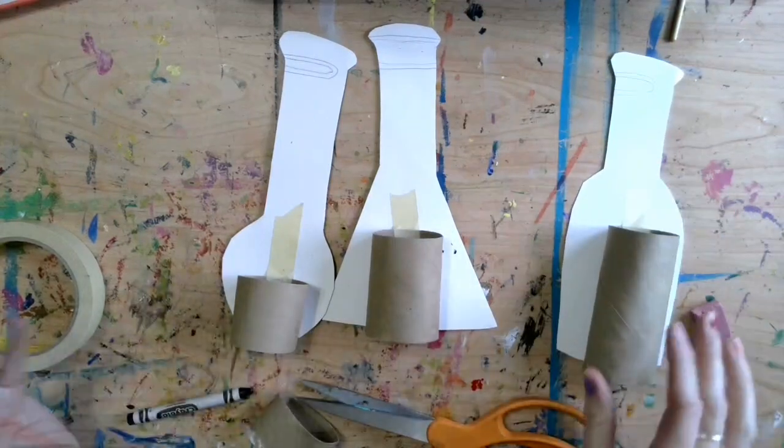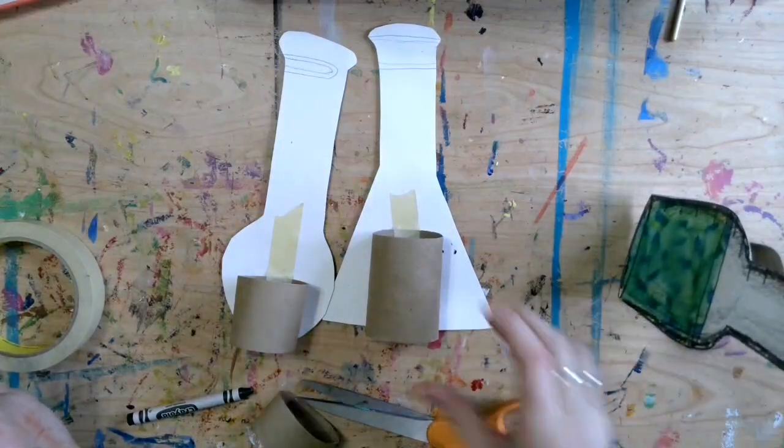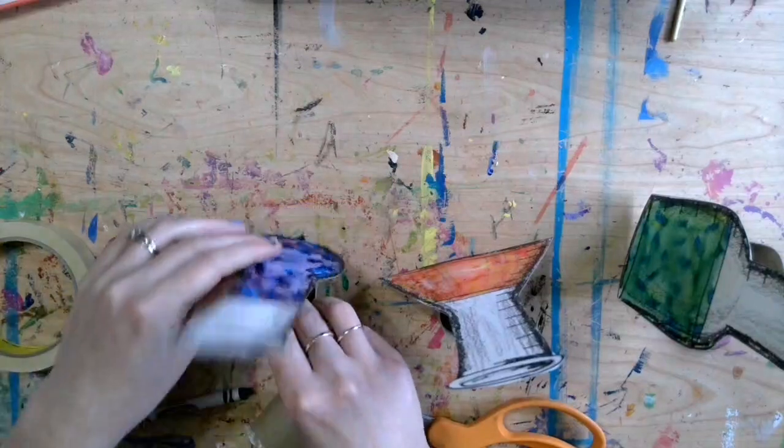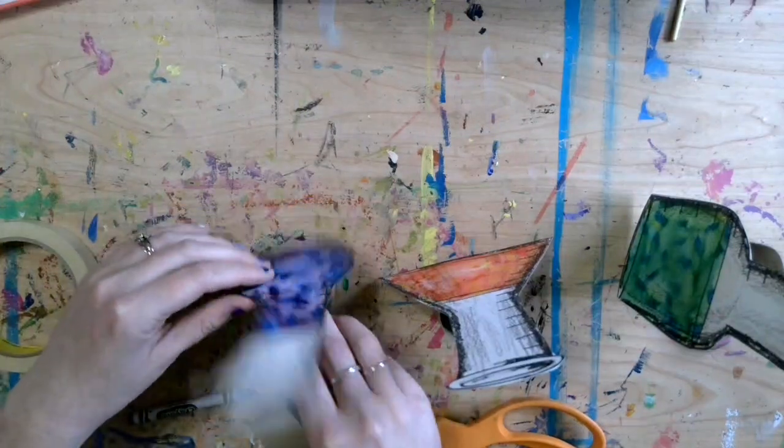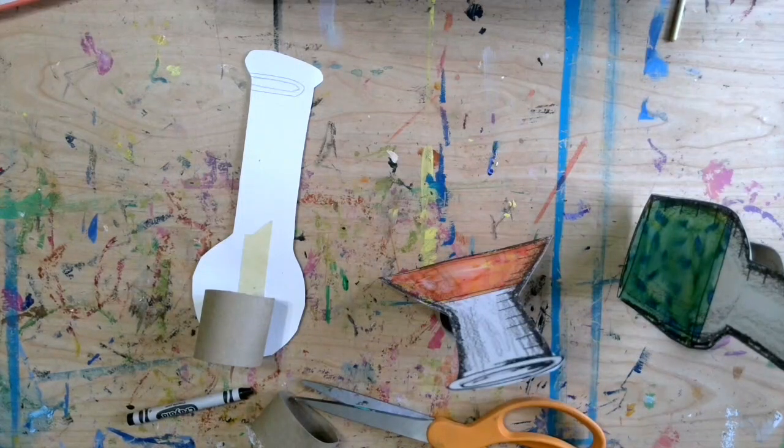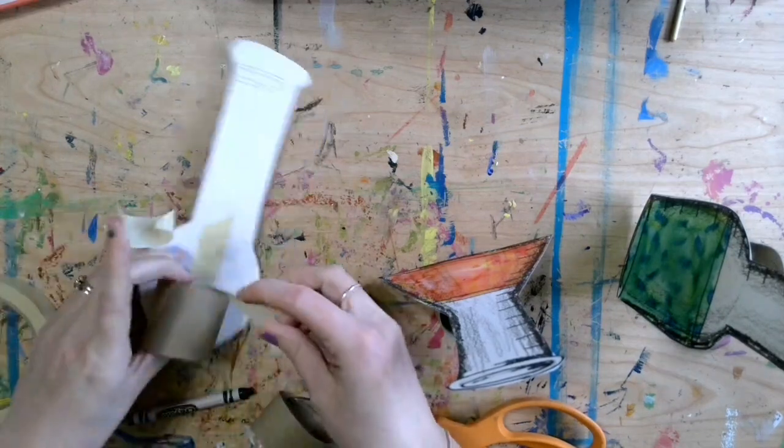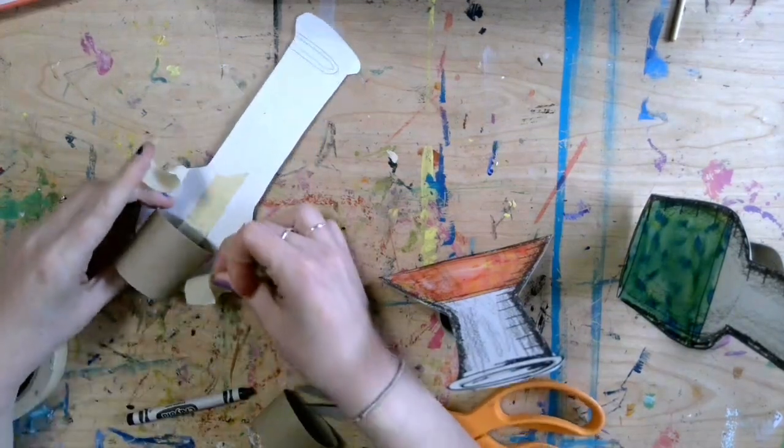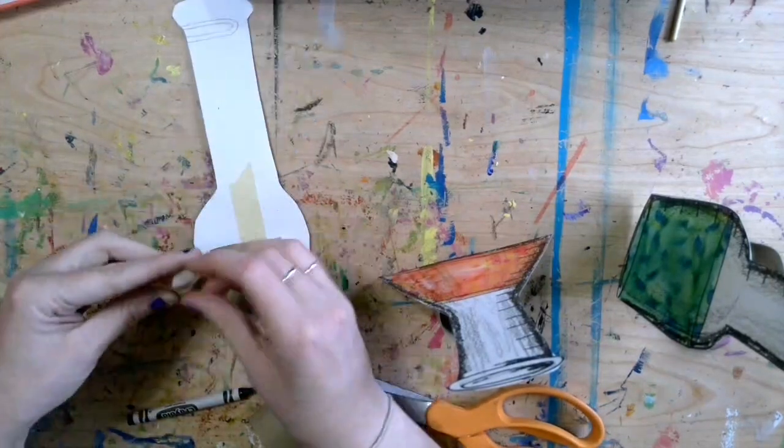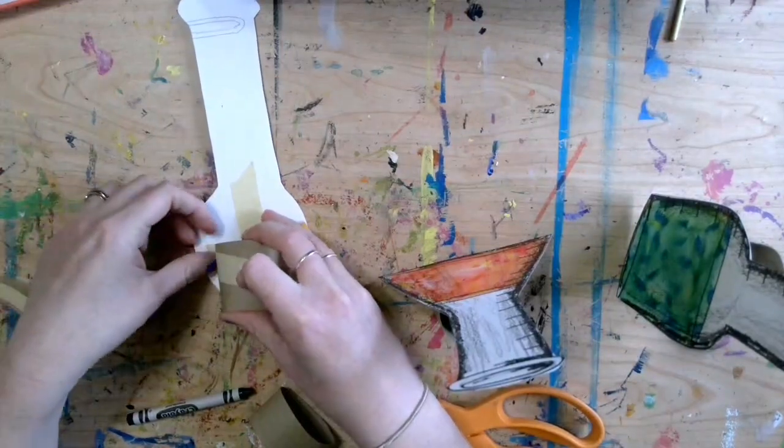Okay. So now, hopefully, these should be able to stand up when I put them upright. This one needs a little extra tape. So if you have a problem like that where it's not standing up, you can take some tape and put it on each kind of side of your toilet paper tube wrapping around and then to the back.